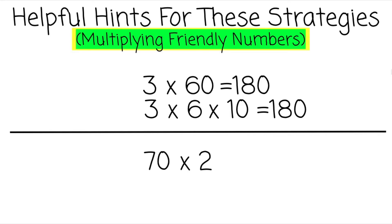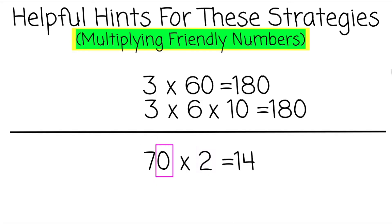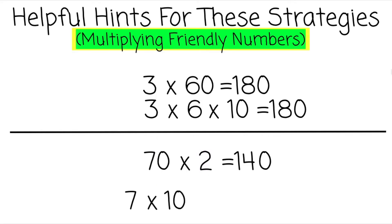70 times 2 — you can think of this as 7 times 2, which is 14. Then you can add that zero, because 70 represents 7 tens, or 7 times 10. So 7 times 10 times 2 is 140.